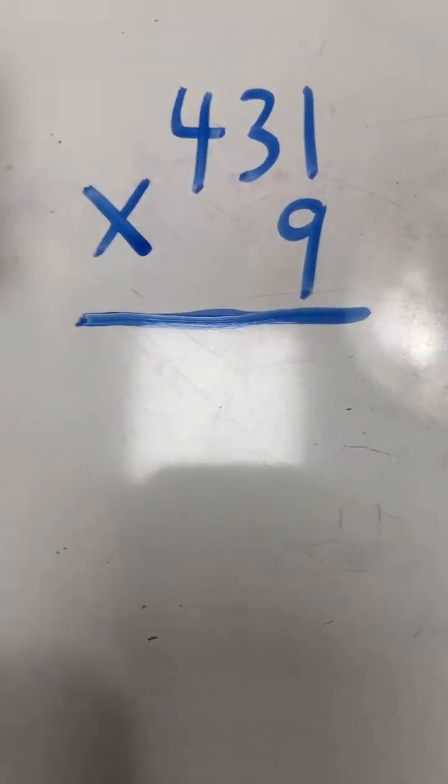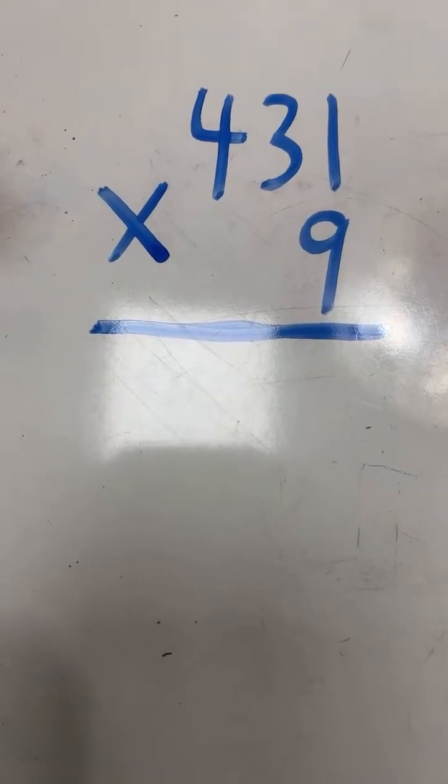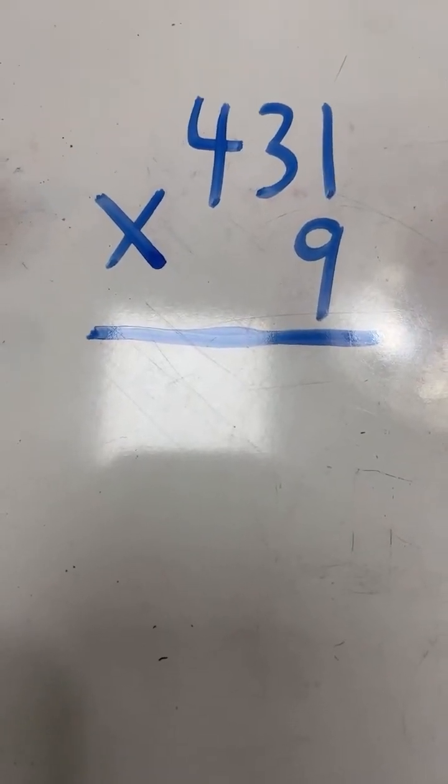So we have 431 times 9. This will be our final three digit by one digit example problem. Then we're going to move on to two digit by two digit.